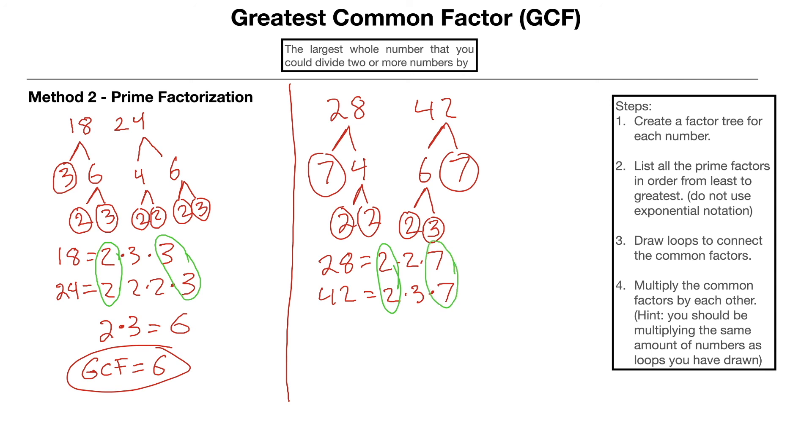Step number 4. Multiply the common things together. That's going to be a 2 times 7. 14. That means the GCF of those two numbers is 14.